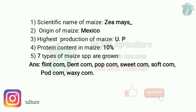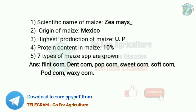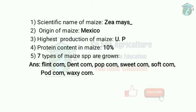First, maize. The scientific name of maize is Zea mays. The origin of maize is Mexico. The highest production of maize is in Uttar Pradesh according to 2020 data. The protein content in maize is 10%, though protein content is higher in wheat.